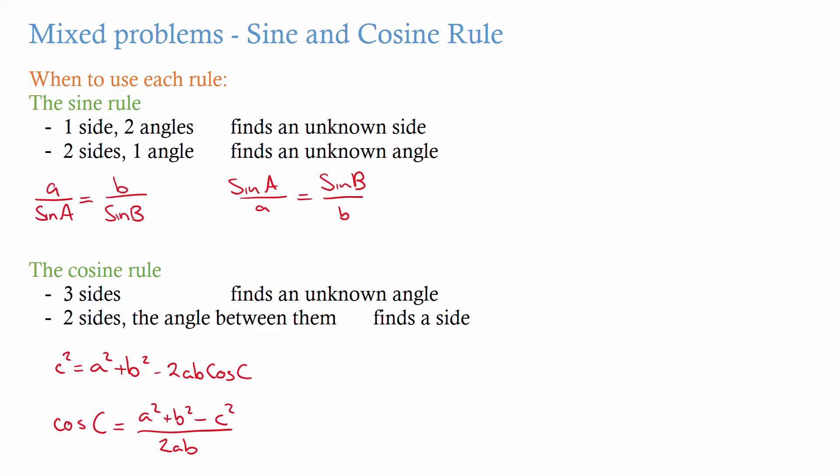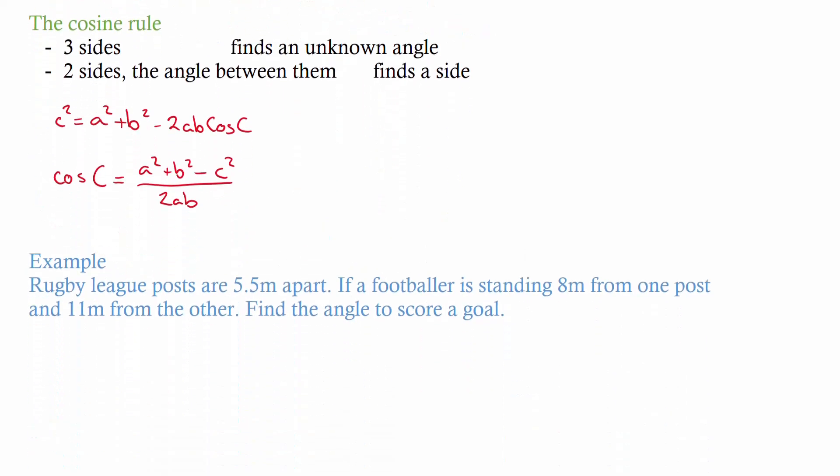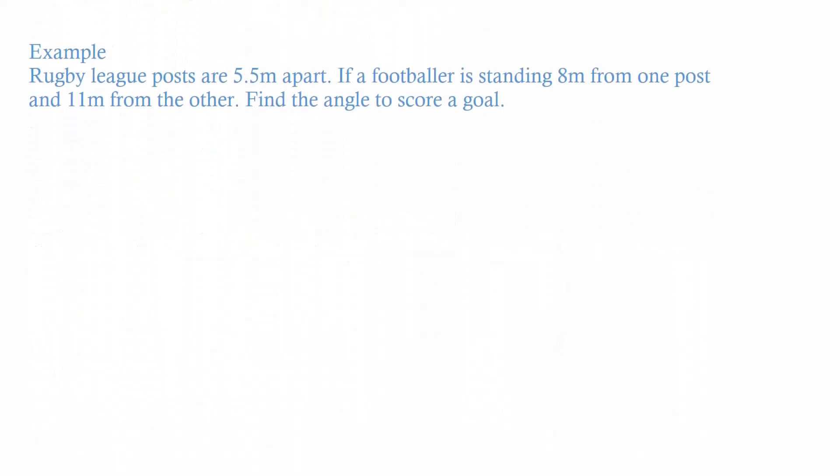The best way to start is doing an example. We have rugby league posts that are 5.5 meters apart. If a footballer is standing 8 meters from one post and 11 from the other, we need to find the angle to score a goal. With these type of questions the best thing to do is start by just drawing something. So we've got our posts over here and we know that they're 5.5 apart and we've got someone down here trying to kick a goal.